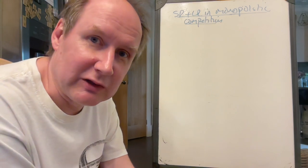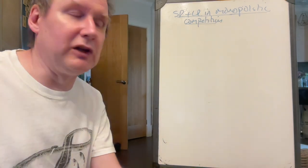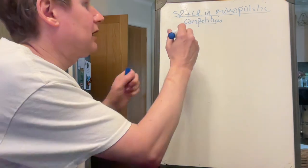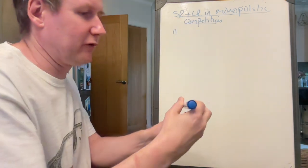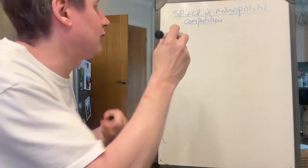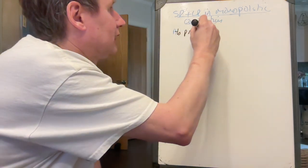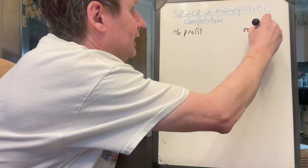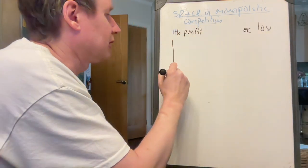But the way we illustrate that is in a slightly different way. So let's imagine, here we'll have a firm that's making abnormal profit. Here we'll have a firm that's making an economic loss.